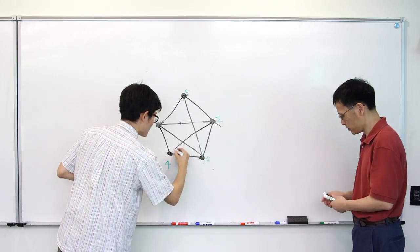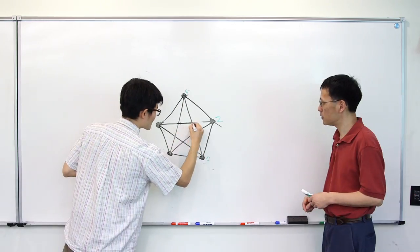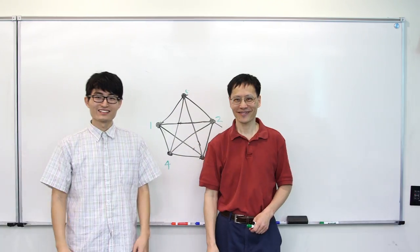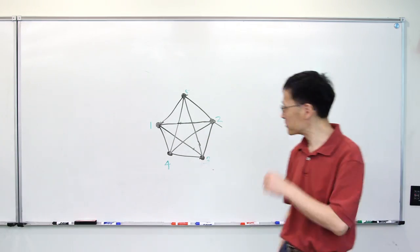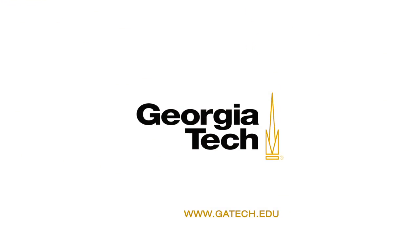By the way, this is not how our mathematicians found their proof for the Kelman-Seymour conjecture. That covers about 120 pages of mathematical reasoning. Ben Brumfield for Georgia Tech Research News.